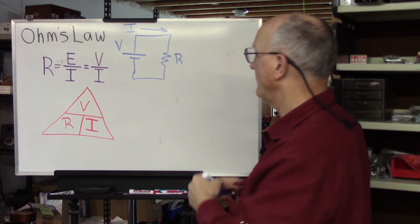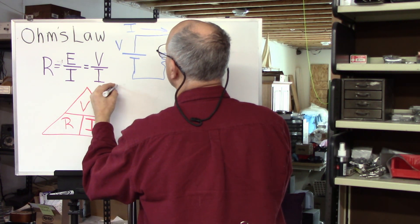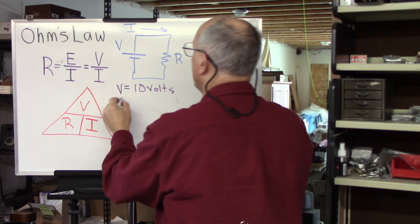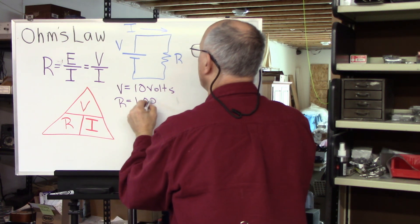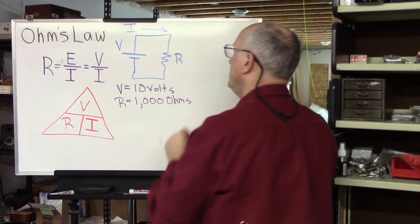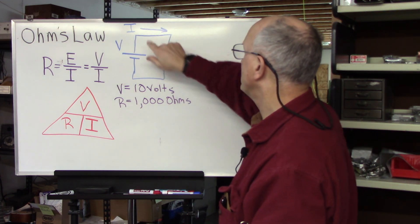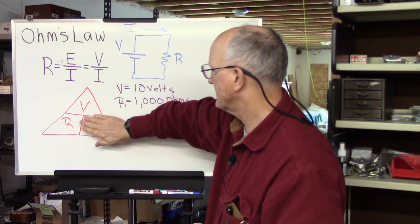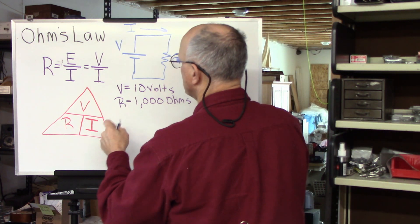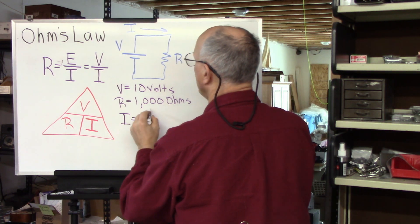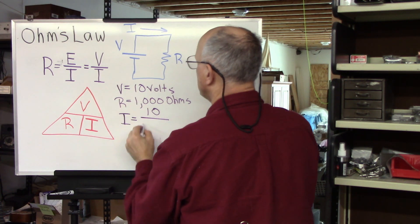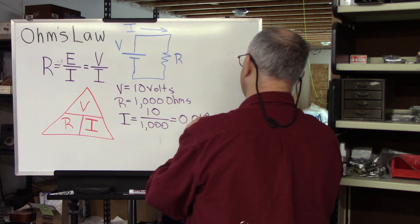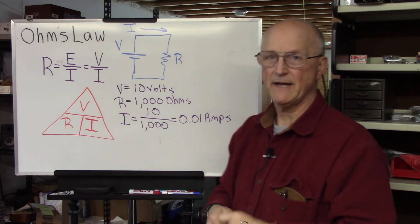Suppose that our voltage here is 10 volts. And we know that the resistor R is equal to 1,000 ohms. We want to find out what the current is. So we cover up the current, and we find that the voltage divided by the resistance is equal to the current. Current is equal to the voltage, which is 10 volts, divided by the resistance, which is 1,000. And this equals 0.01 amps. Just as simple as that.